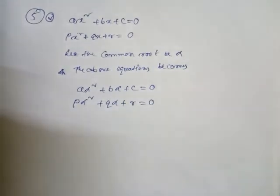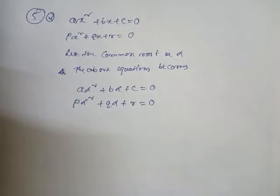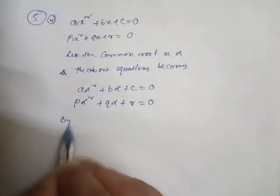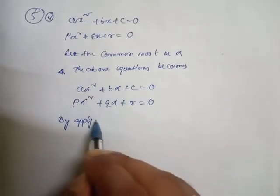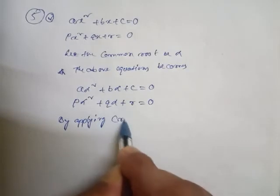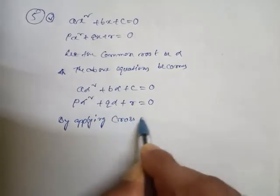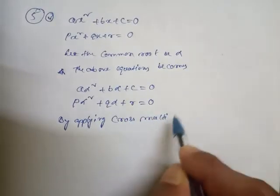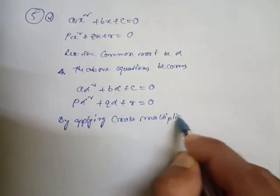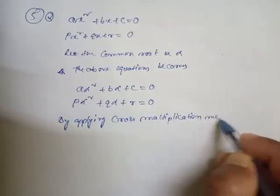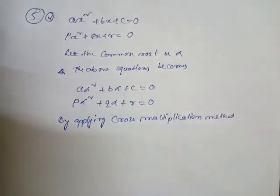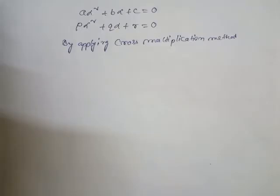Now we can apply here the cross multiplication method. By applying the cross multiplication method, we get the terms for alpha square, alpha, and the constant.